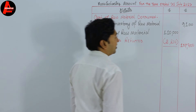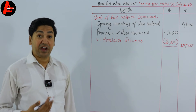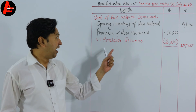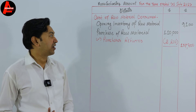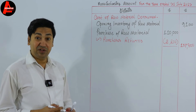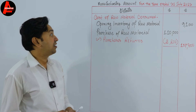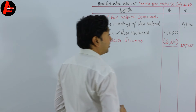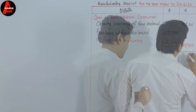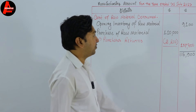After subtracting, we get 107,800 dollars — this is our net purchases. Note: if there is carriage inwards on purchases of raw materials, you need to add it to purchases. We don't have that here, so we skip it. Then we add the two amounts: 9,100 plus 107,800 equals 116,900 dollars.